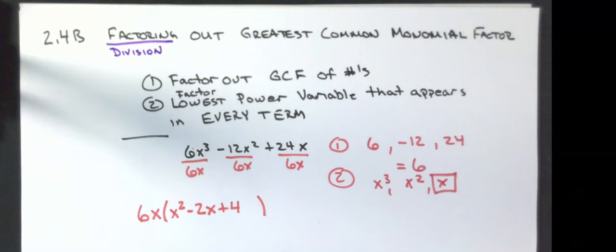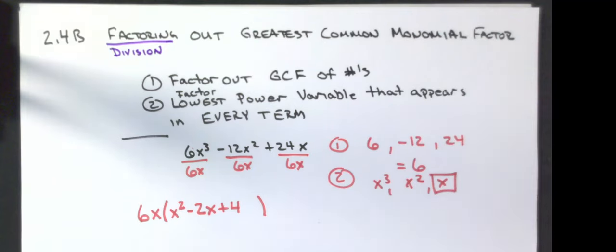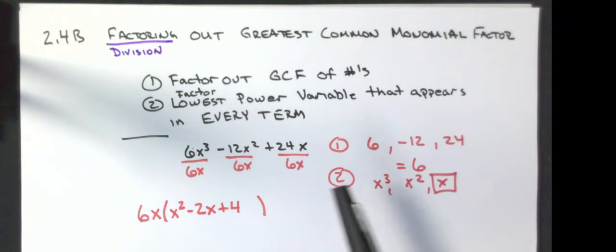So you're factoring out the biggest number that goes into every single number, and you're pulling out the lowest variable that appears in every term.